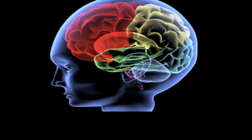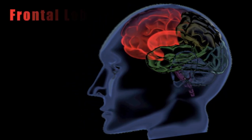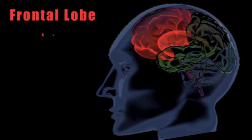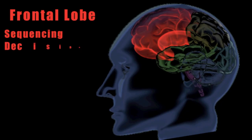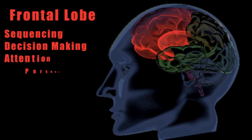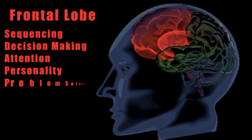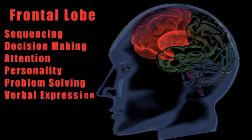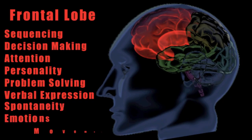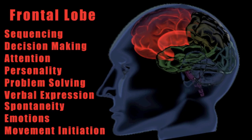The changes seen when there's an injury to the frontal lobe include problems with sequencing, perseveration, and difficulty making decisions. People experience decreased attention, changed personality, problem-solving difficulties, a decrease in their ability to verbally express themselves, a lack of spontaneity, uncontrolled emotions, social and sexual behaviors, and decreased initiation of voluntary movements.